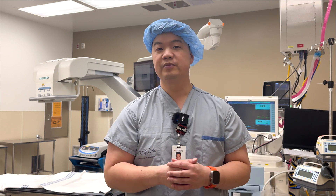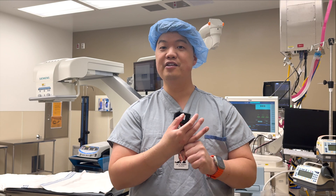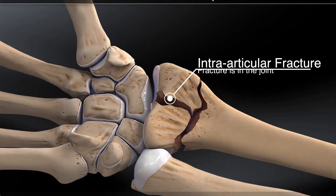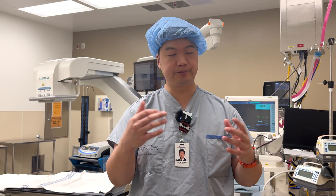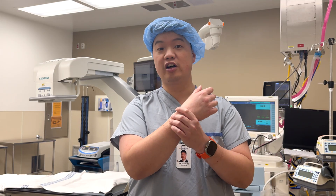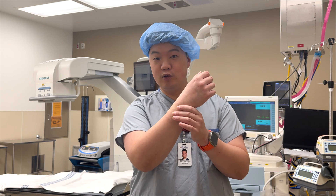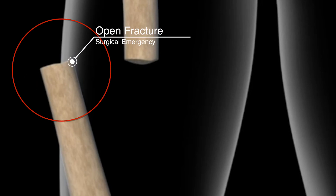Some additional things we consider are whether the fracture is in the joint — called intra-articular — whether there's a lot of soft tissue involvement, or whether there are fractures of other bones like the ulna. Since there isn't much soft tissue surrounding these bones, there's also a chance the bone can actually break through the skin, called an open fracture, and that is a surgical emergency.